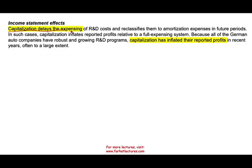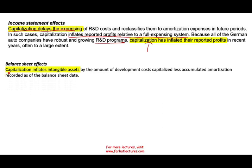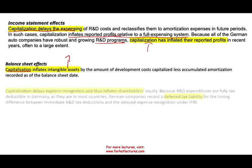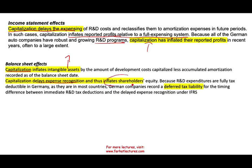Intangible assets also affect the income statement, balance sheet, and cash flow statement. On the income statement: if you capitalize your expenditure, it delays expenses — which inflates your profit relative to a full-expense system. So if you're not expensing R&D now but capitalizing it, it increases your profit. That's why many German companies with growing R&D programs show inflated reported profits through capitalization. On the balance sheet: capitalizing inflates your assets, delays expense recognition, which in turn inflates equity through higher profit.